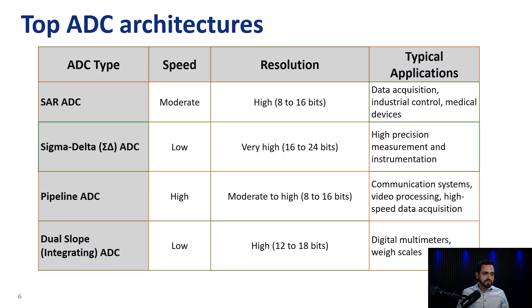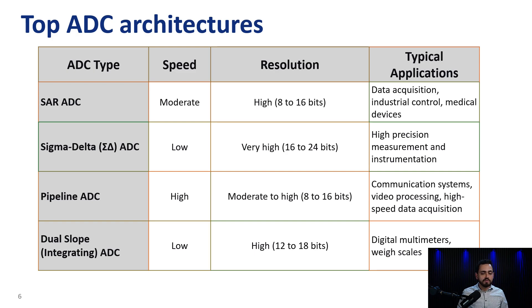Next, we have Sigma Delta, or Delta Sigma, ADCs. They have very high resolution and use oversampling and noise shaping to achieve high resolution and low noise. However, they have a relatively lower speed compared to other architectures. This makes them ideal ADC candidates for high-resolution, low-speed types of measurements.